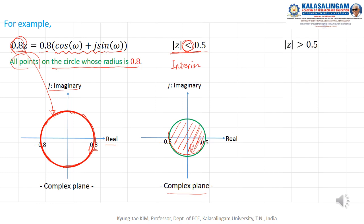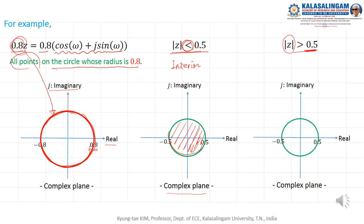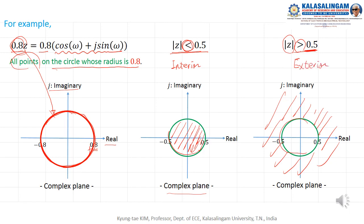Also, Z greater than 0.5 means the exterior of that circle — all exterior points of the circle. To summarize: less than means the interior of the circle, and greater than means the exterior of the circle.